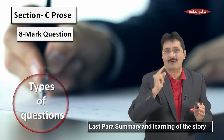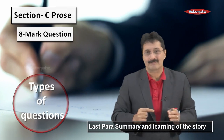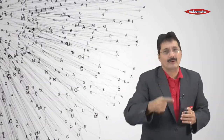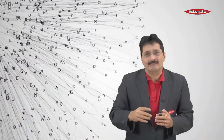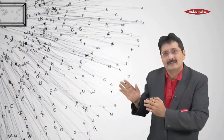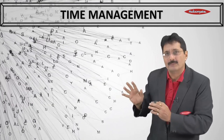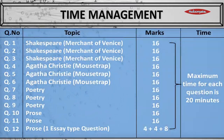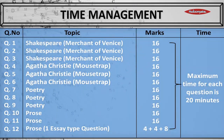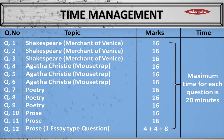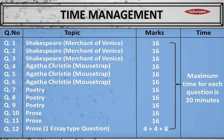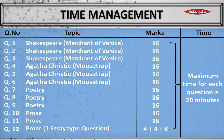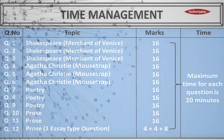Finally, let's look at time allotment. Allocate 20 minutes for every main question, making a total of 100 minutes. The remaining 20 minutes can be used to go through and revise your answers.